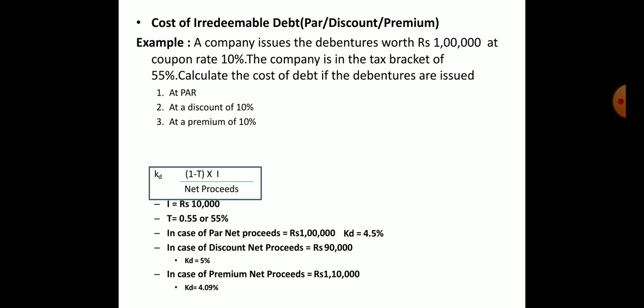At 10% premium: net proceeds = one lakh + 10% = 1,10,000. Applying the formula: Kd = (1 − 0.55) × (10,000 / 1,10,000). Interest of 10,000 is on the face value of one lakh. The cost of debt at premium = 4.09%.